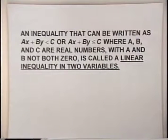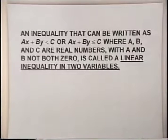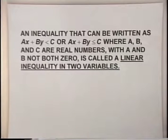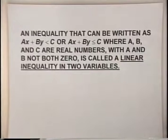Let's take a look at a definition of what we mean by a linear inequality. An inequality that can be written as ax plus by is less than c, or ax plus by is less than or equal to c, where a, b, and c are real numbers with a and b not both zero, is called a linear inequality in two variables.